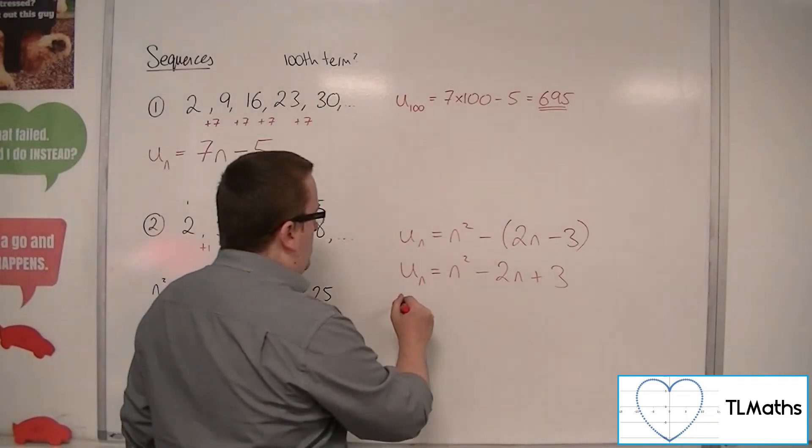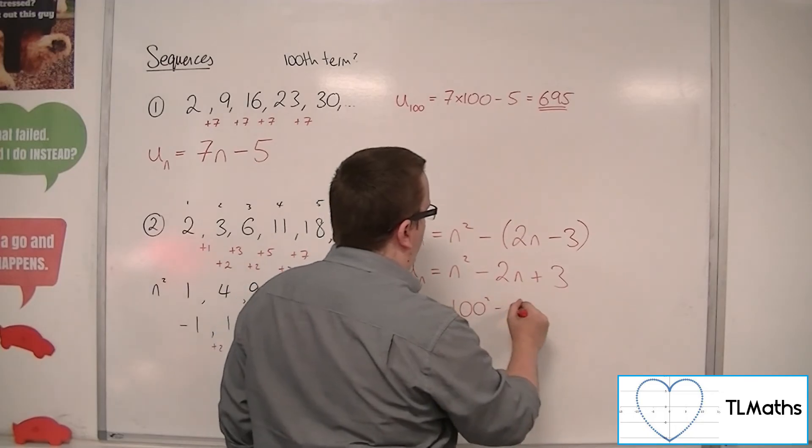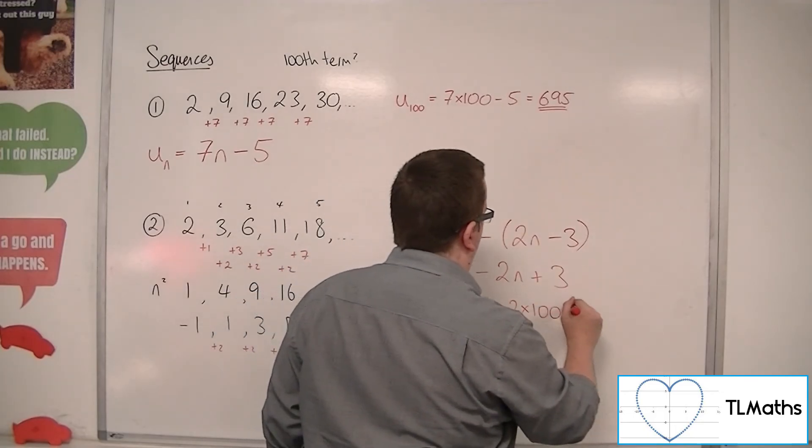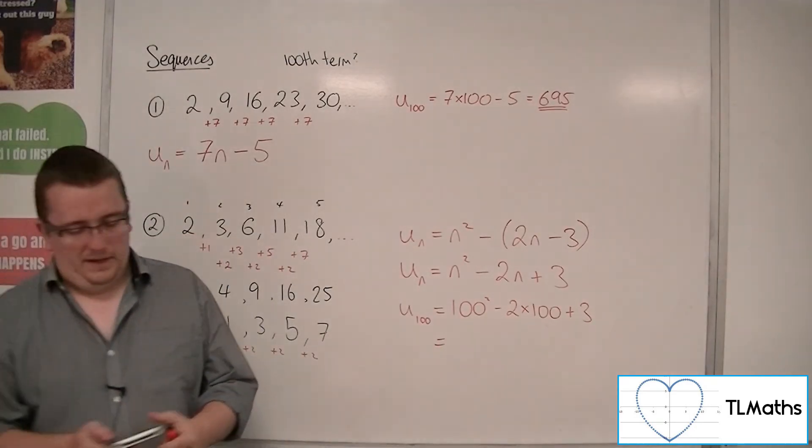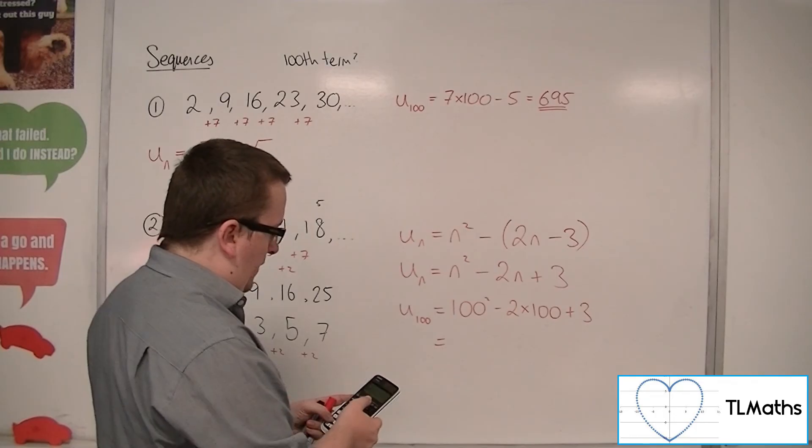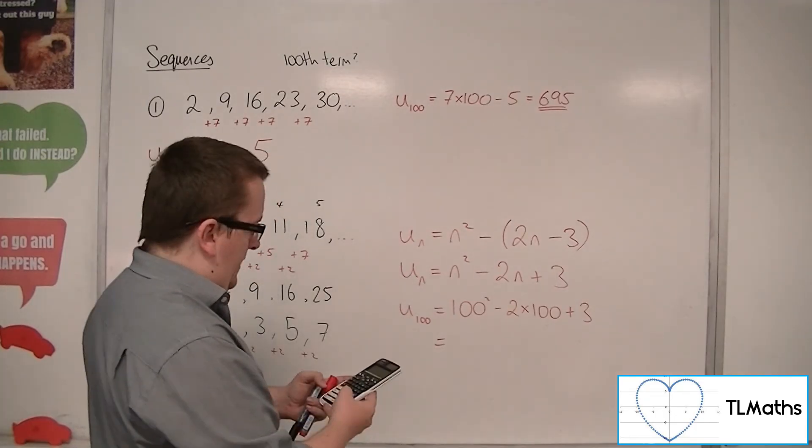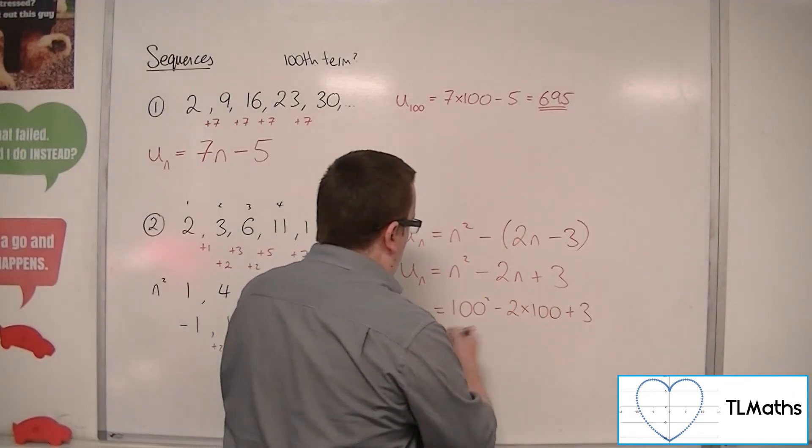So now I can say, the 100th term will be 100 squared, take away 2 lots of 100, plus 3. So I'm going to let the calculator deal with that. 100 squared, take away 2 lots of 100, plus 3, gets me 9,803.